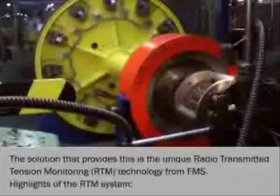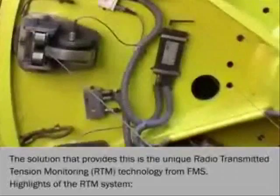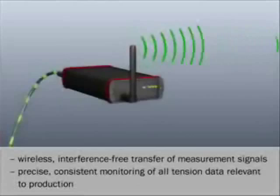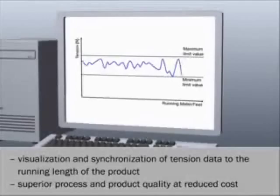The solution that provides this is the unique radio transmitted tension monitoring RTM technology from FMS. Highlights of the RTM system: Wireless, interference-free transfer of measurement signals. Precise, consistent monitoring of all tension data relevant to production. Visualization and synchronization of tension data to the running length of the product. Superior process and product quality at reduced cost.